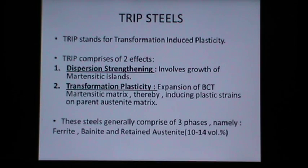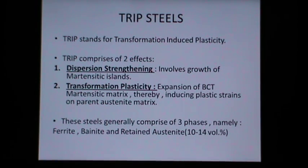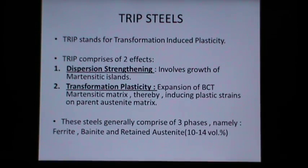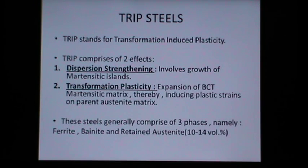We now move on to TRIP steels. TRIP stands for transformation induced plasticity and comprises two effects occurring one after the other. The first effect is dispersion strengthening involving the growth of BCT martensitic islands, and the second is transformation plasticity, which involves expansion of the BCT martensitic matrix, thereby inducing plastic strains on the parent austenite matrix.